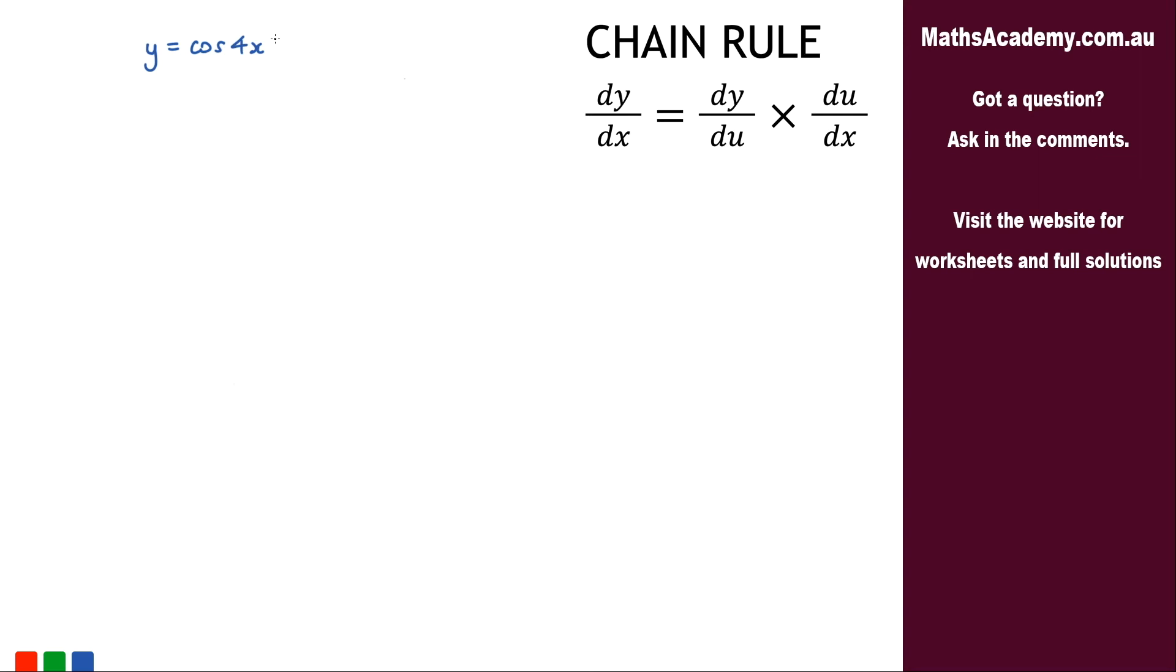Welcome to today's lesson. For this one we're asked to differentiate y equals cosine of 4x. As you can see on the right hand side, we're going to be using the chain rule.